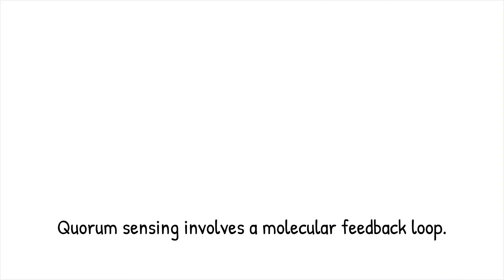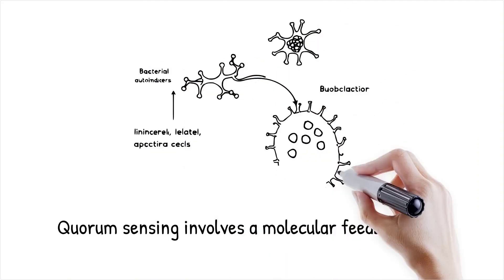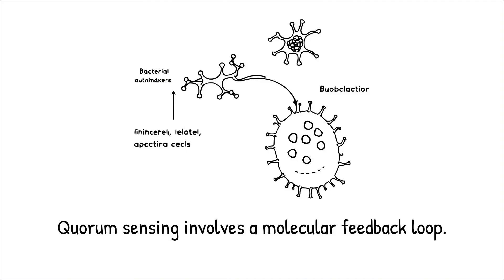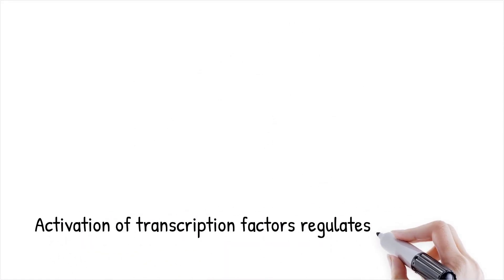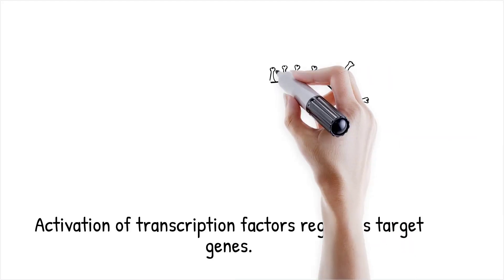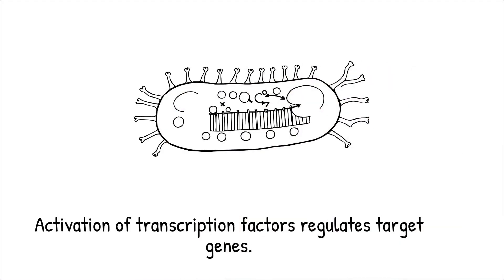Quorum sensing involves a molecular feedback loop. Bacteria synthesize and secrete autoinducers into their environment. Autoinducers accumulate as the bacterial population grows. Once a threshold concentration is reached, autoinducers bind to specific receptors in bacterial cells. This binding activates transcription factors, which regulate the expression of target genes. The signaling pathway ensures a tightly regulated response, enabling bacteria to adapt their behavior to environmental and population conditions.